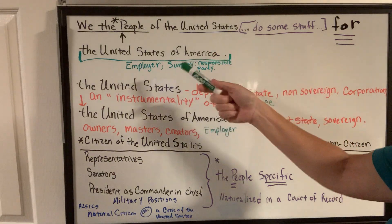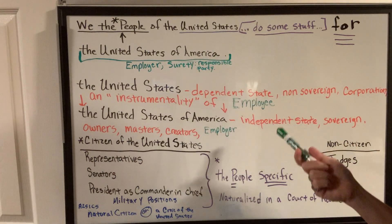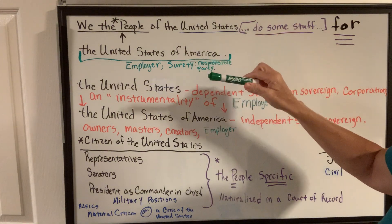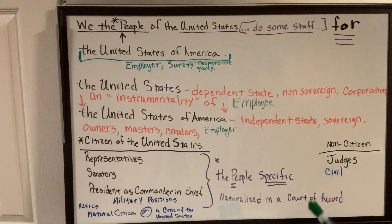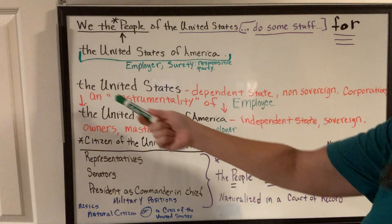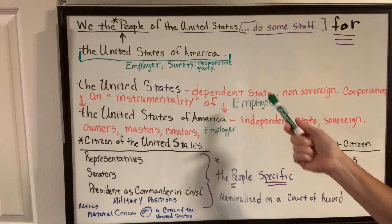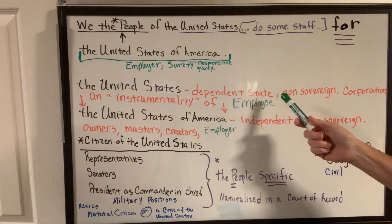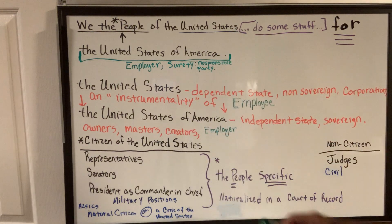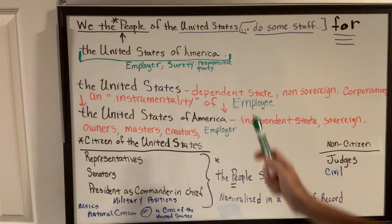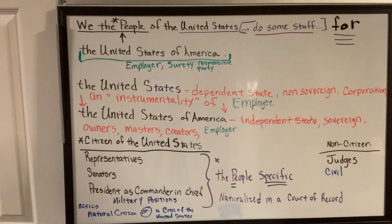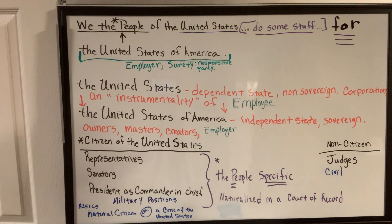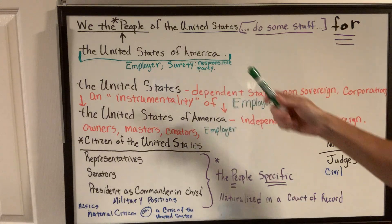If these were the same places, it would just say 'we the states do some stuff for ourselves,' and it kind of looks like that's what it says, but it's really not. So the United States are dependent states, and Black's Law 9th defines 'dependent state' as meaning it can't stand alone. It wants to stand alone. It wants power over the states and the people. It wants to rule, to be able to do whatever it wants.